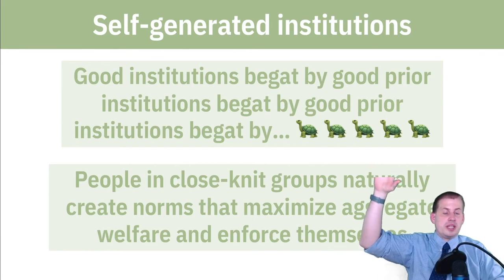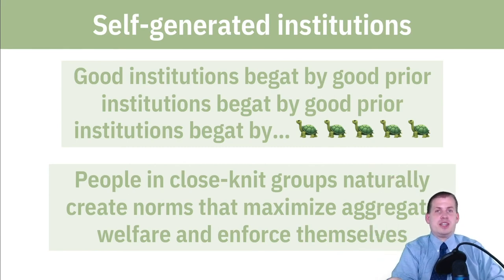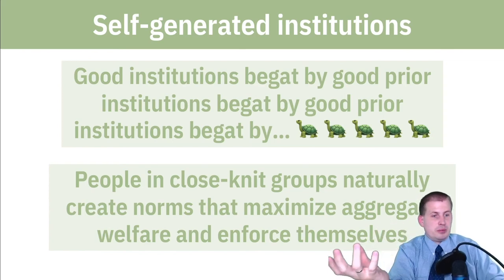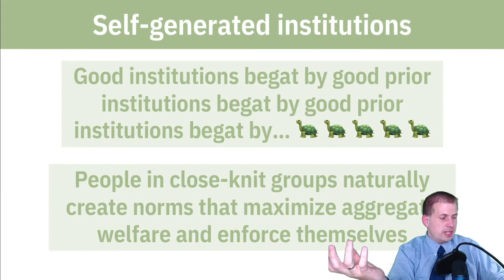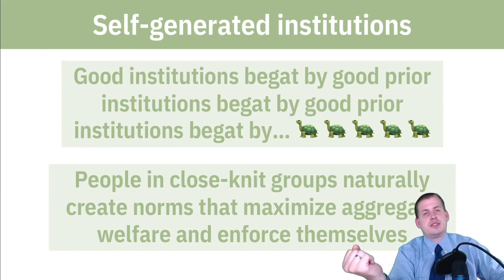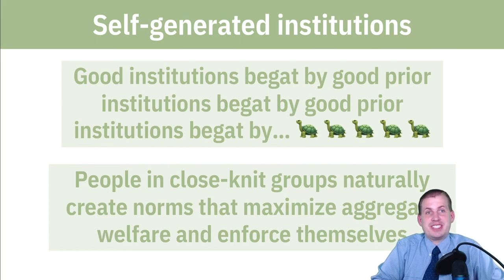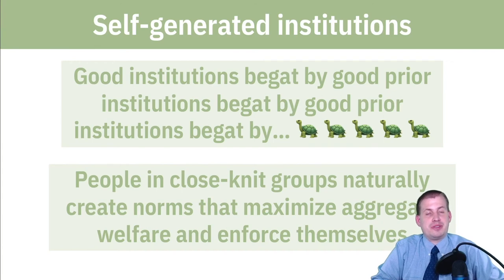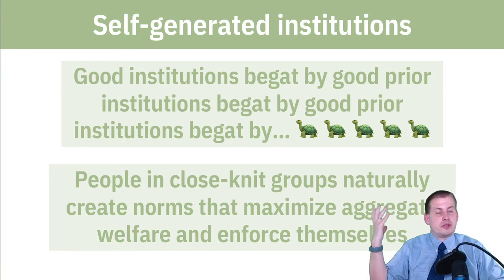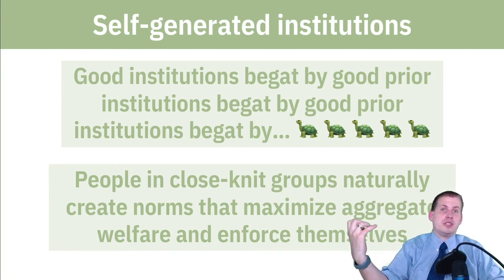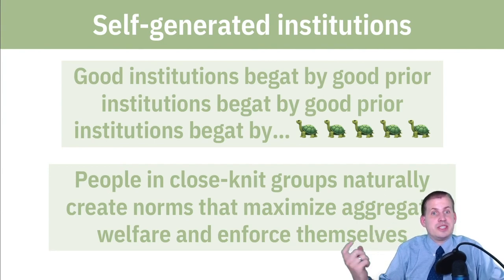Ostrom gives an example of a different fishing village in Turkey — Bodrum — where they tried this but it didn't work. There were too many fishermen and they didn't have close-knit ties to everybody in the society. As a result, you could cheat and if you got punished, you could just move to a different part of the city — the shame wouldn't follow you because it was a bigger community. In a smaller close-knit community you can enforce these norms very powerfully, but in a larger one it's really hard.